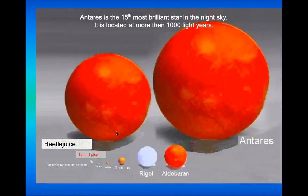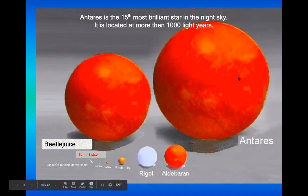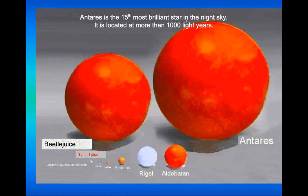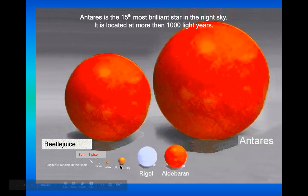Antares — look at how big Antares is. Our sun is just one pixel compared to Antares. There's a wide range of star sizes from very small to very large. Antares is the 15th most brilliant star in the night sky, located more than 1,000 light years away. Then Betelgeuse, Rigel, and Aldebaran — stars of extraordinary size.